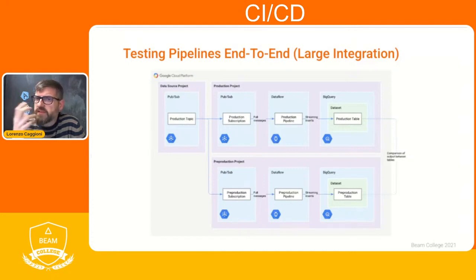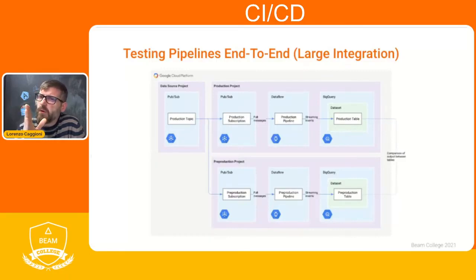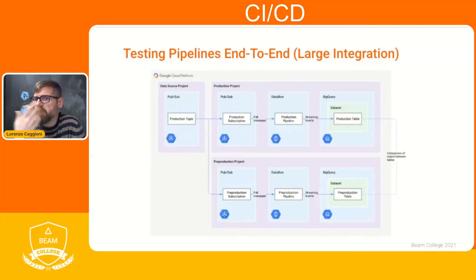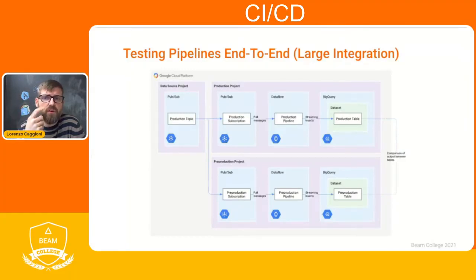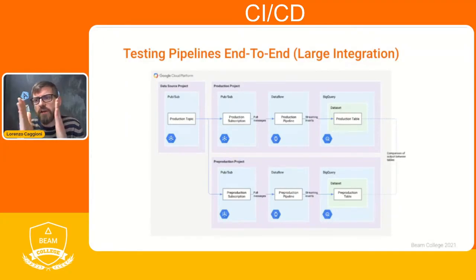That is not the only option depending on the use case you are working on. Another option is A/B testing. If the data you are streaming can be split — for example on entry to the topic — and the sink can tolerate a different version of the transform, then this gives you a great way to ensure everything goes smoothly in production by running an A/B test when possible.